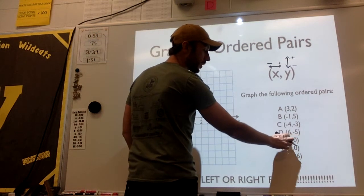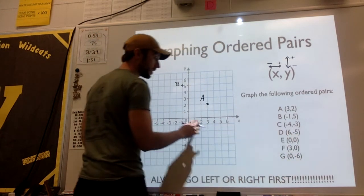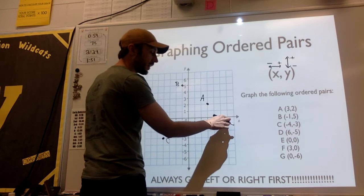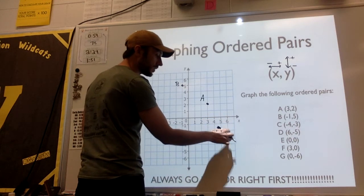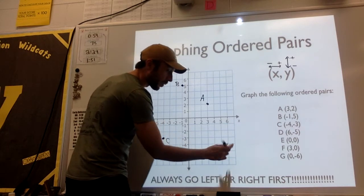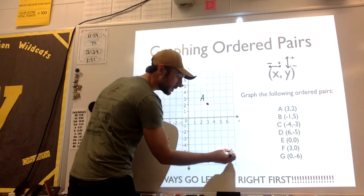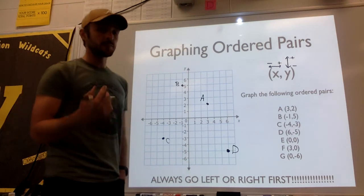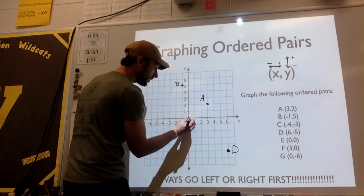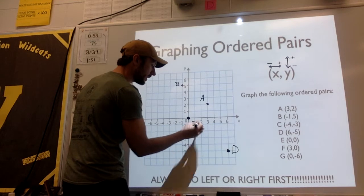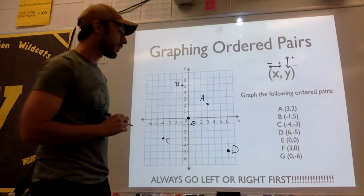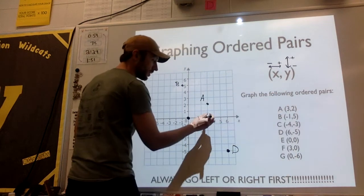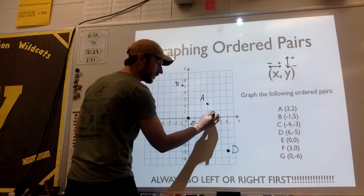D is positive, negative — so right then down. I go 6 on the x-axis, then down 5. That would be point D. E is located at (0, 0) — like the previous slide, that is our origin, so that's point E. Point F is at (3, 0), which means move right 3 and up or down 0 — right there would be point F.